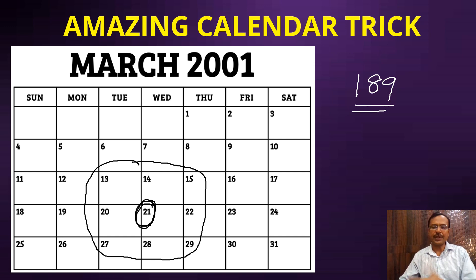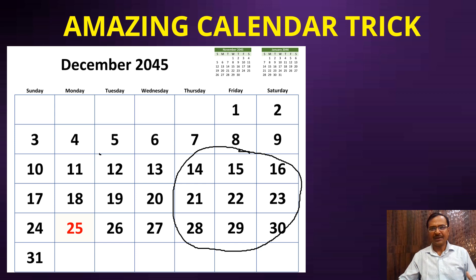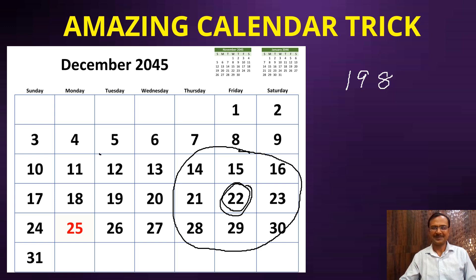Let's take one more example with a future year — December 2045 calendar. You can pick any random calendar, any past or future year, and pick any random block. Suppose the friend picks a block and tells you only that the number in the center is 22. Immediately you can tell him that the sum of the numbers he has is 198. That's the speed with which you can tell him the answer of the set of numbers he is selecting.